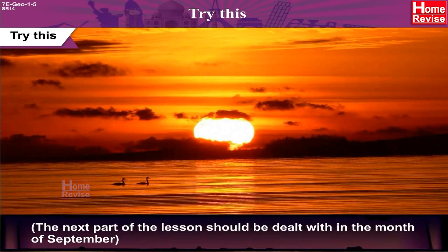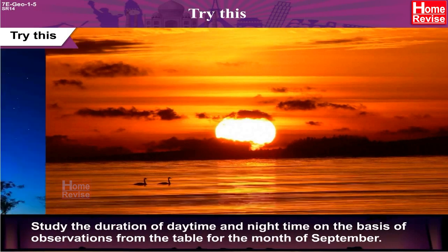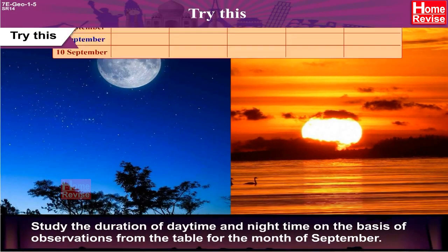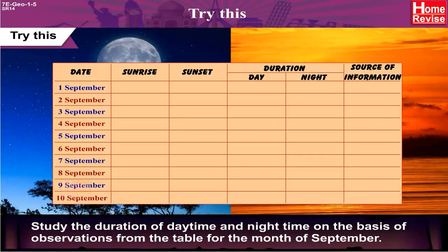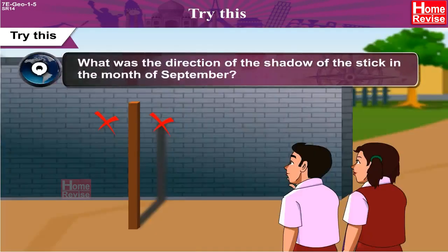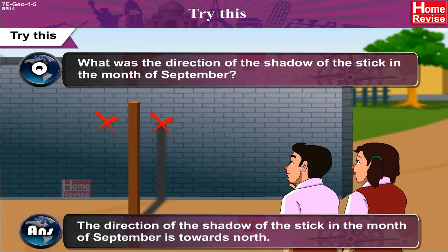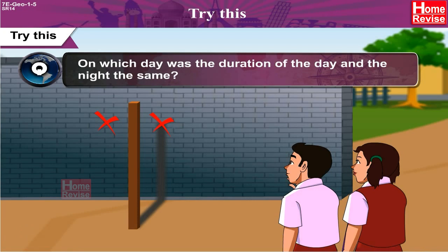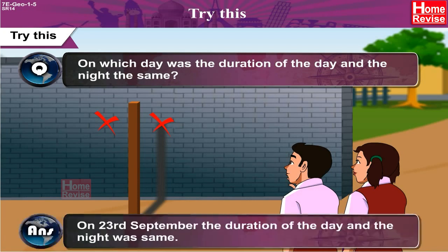The next part of the lesson should be dealt with in the month of September. Study the duration of daytime and nighttime based on observations from the table for September. Question: What was the direction of the shadow of the stick in September? Answer: The direction of the shadow in September is towards north. Question: On which day was the duration of day and night the same? Answer: On 23rd September, the duration of day and night was the same.